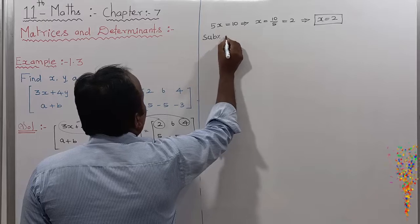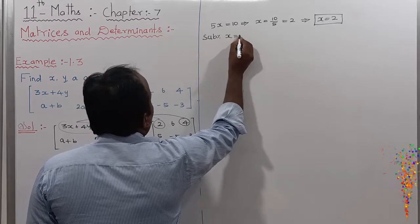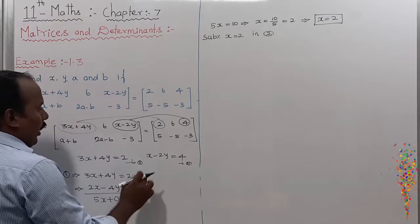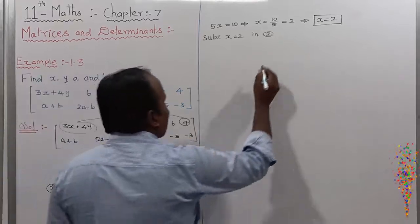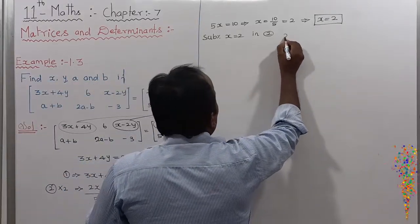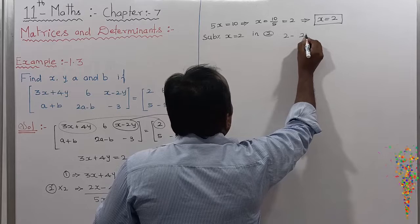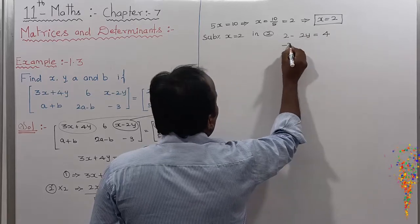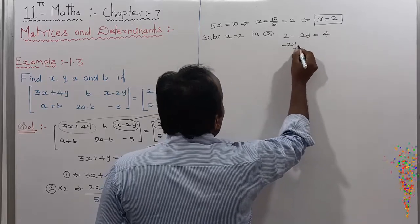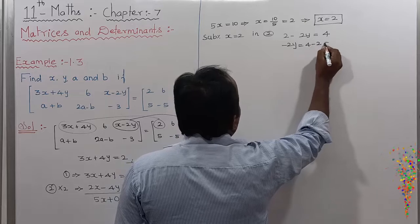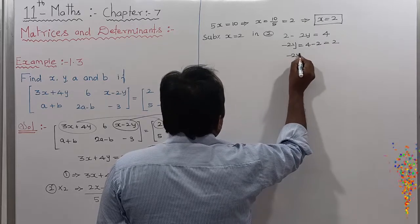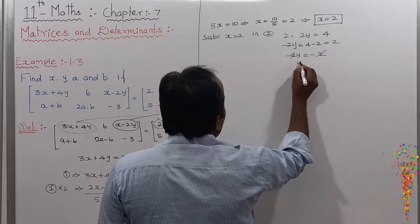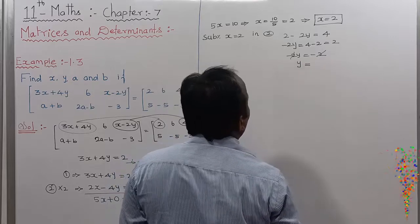Substitute X equals 2 into equation number 2 to find the value of Y. X is replaced by 2: 2 minus 2Y equals 4. So minus 2Y equals 4 minus 2, which equals 2. Therefore minus 2Y equals 2.